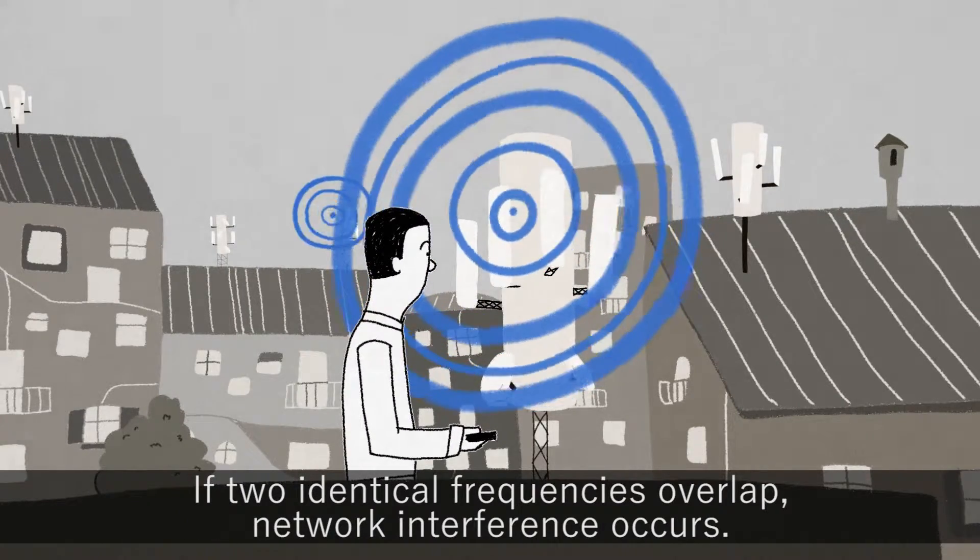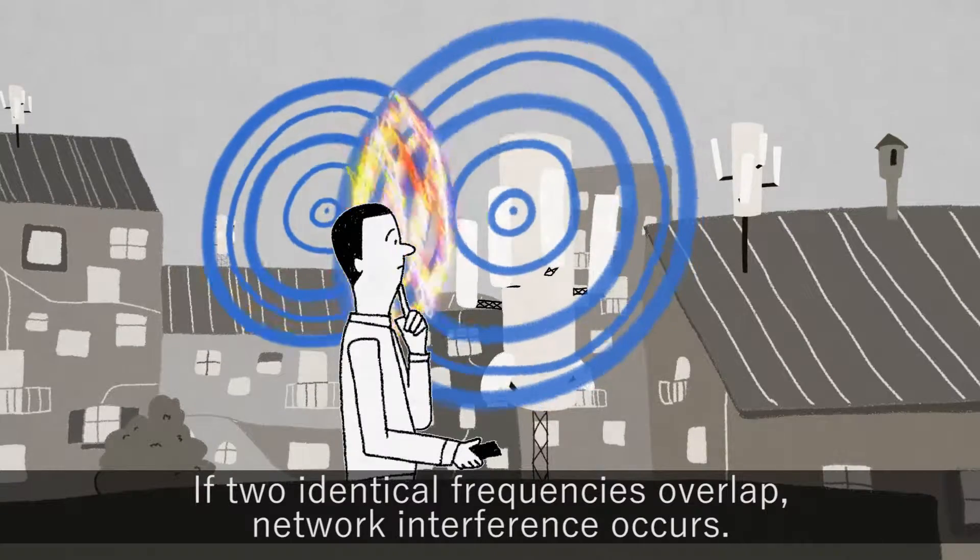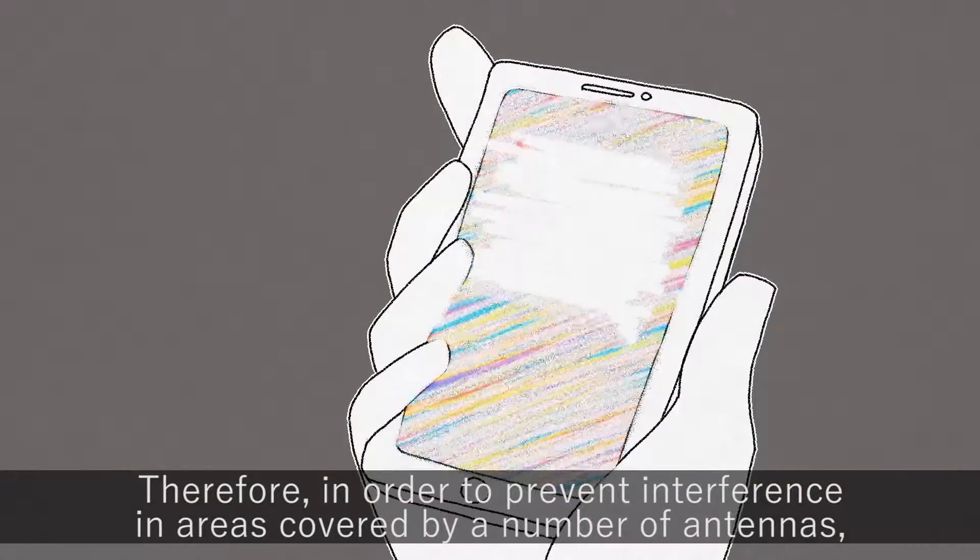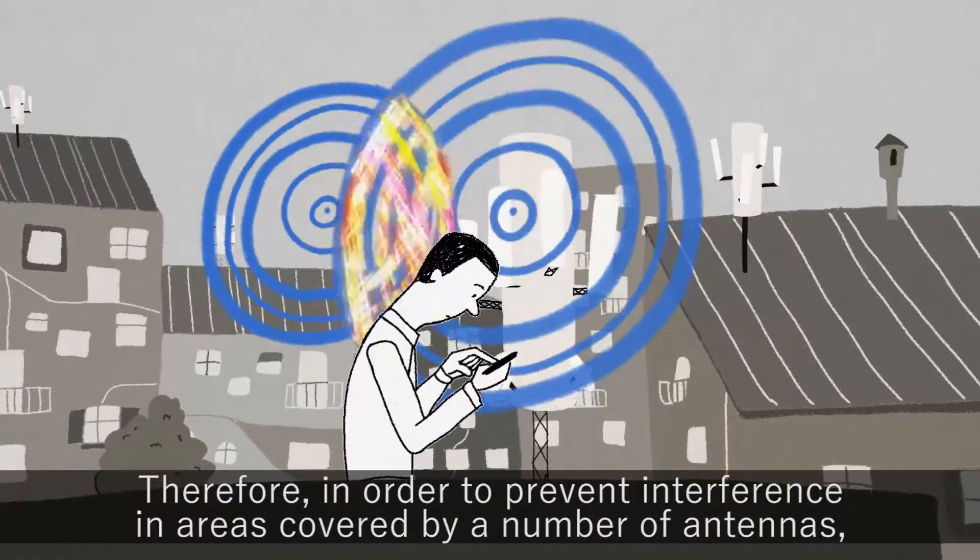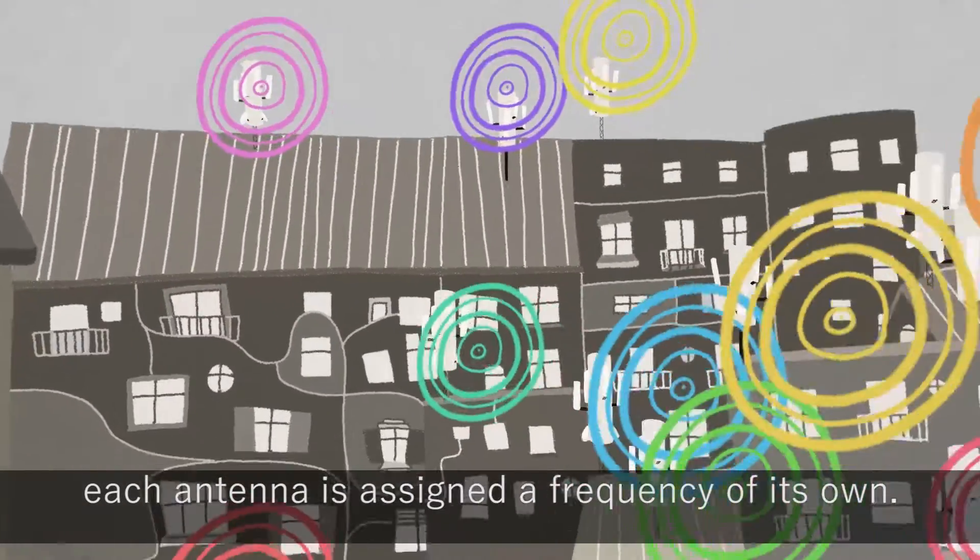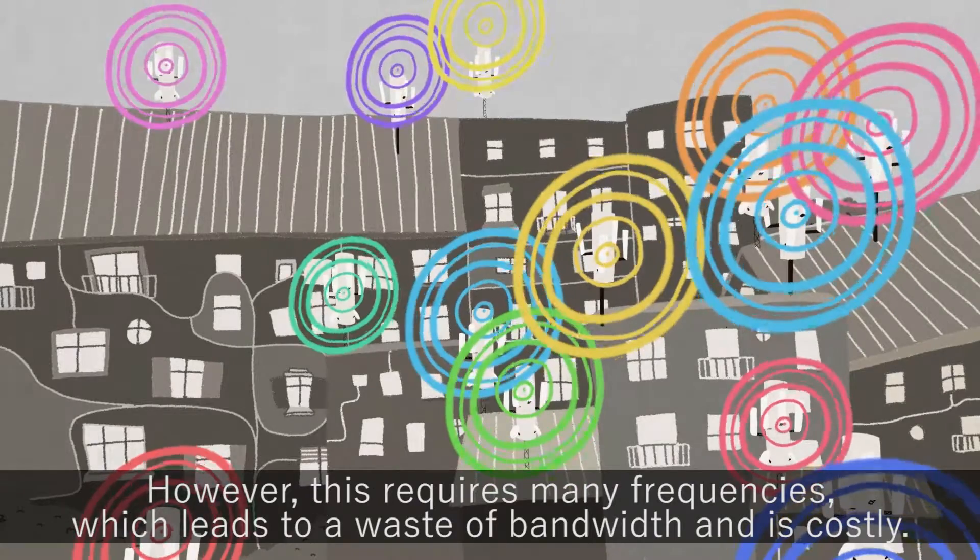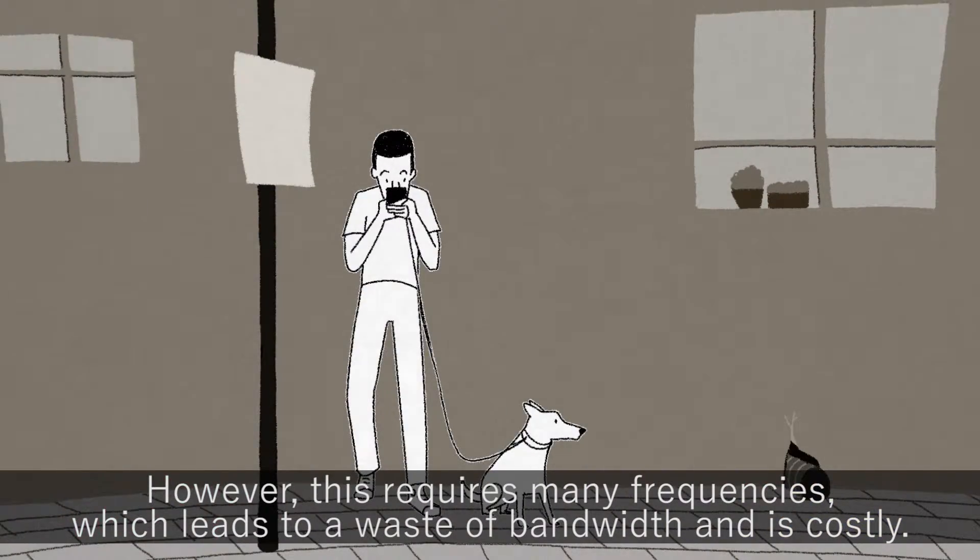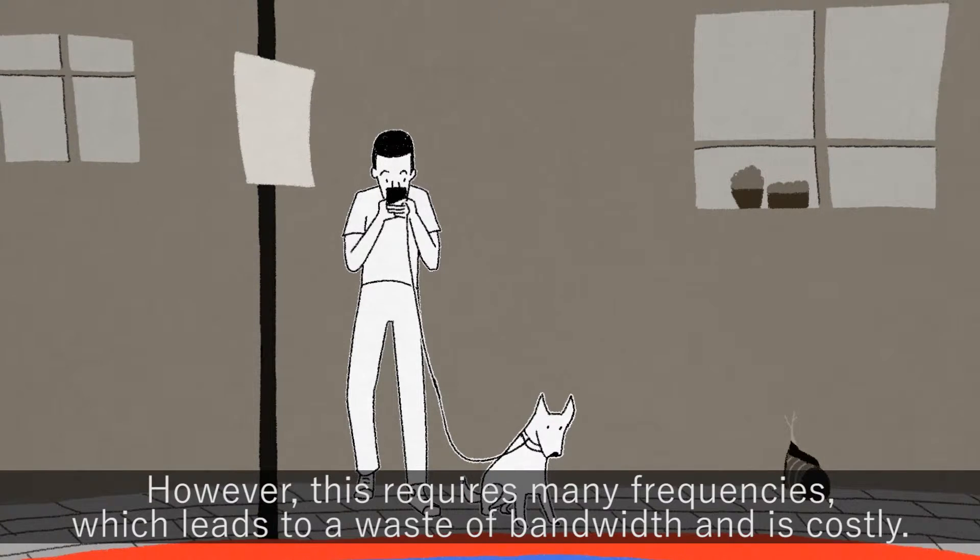If two identical frequencies overlap, network interference occurs. Therefore, in order to prevent interference in areas covered by a number of antennas, each antenna is assigned a frequency of its own. However, this requires many frequencies, which leads to a waste of bandwidth and is costly.